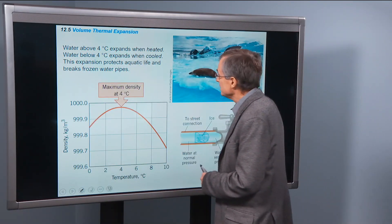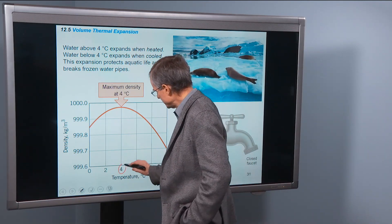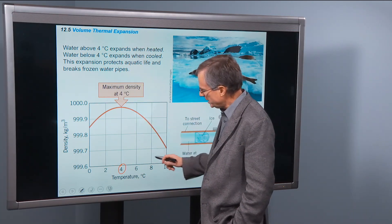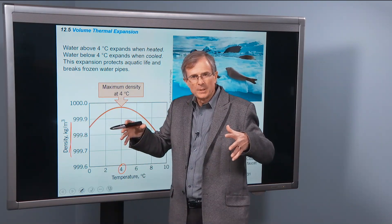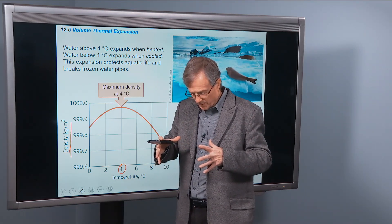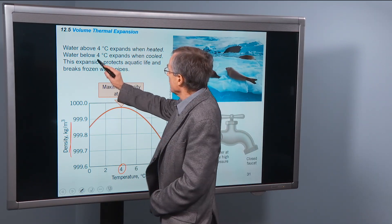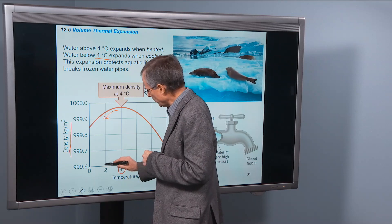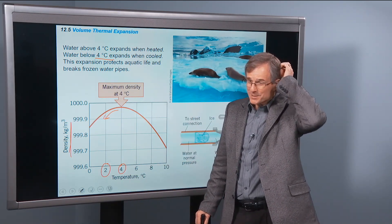Water above 4 degrees expands when heated. So here's 4 degrees C. If we go above 4 degrees, the density of the water goes down. That's what we mean by expansion. If the water expands and becomes bigger, its mass per unit volume is going to go down. But water below 4 degrees C expands when it's cooled. So as we're going down to lower temperatures, temperature lower than 4 degrees, we're also expanding, going to lower density.